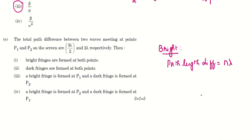And for the dark fringe, it is path length difference equals n plus 1 by 2 lambda. So here we have 2 lambda. So which means this produces bright fringe, bright fringe.